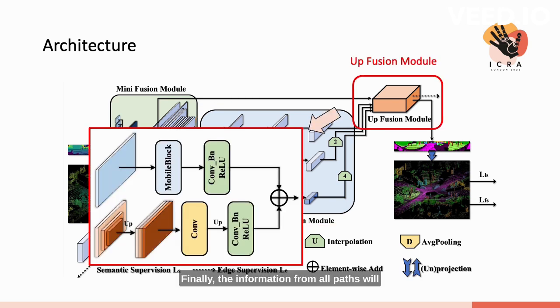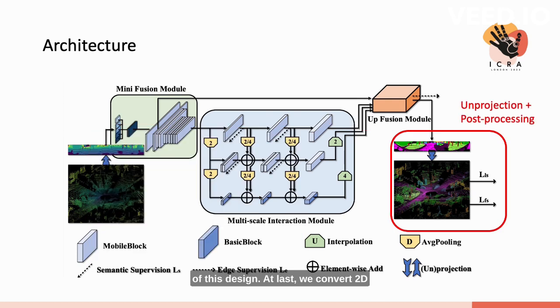Finally, the information from all paths will be interacted at the app-fusion module. In the experiment, we will show the advantage of this design. At last, we convert the 2D projection map back to 3D space and apply post-processing on it, like k-nearest neighborhood. By this, we can get 3D predictions.